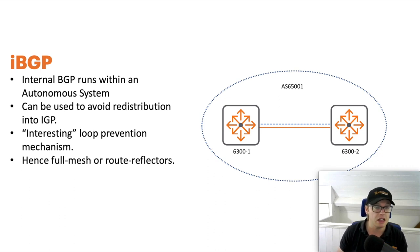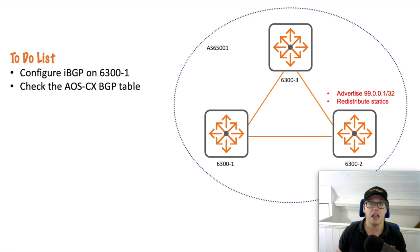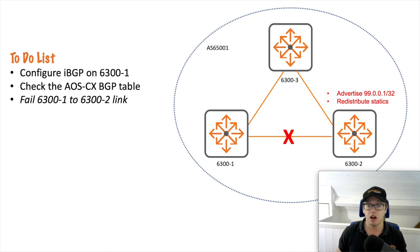We're just going to look at the basics. Here's my network of Aruba AOS CX 6300s. I've got three of them in this setup. I've already configured dash-two and dash-three, so those are ready to go. For my to-do list, I'm going to configure iBGP on the 6300-1. Then I'll check the BGP table, and to dive into the protocol a bit deeper I'm going to fail the link between dash-one and dash-two.